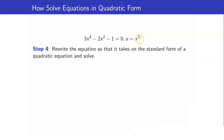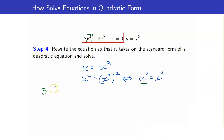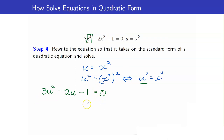If u is equal to x squared, this means that u squared is equal to x squared squared, or u squared is equal to x to the 4th. We now substitute: 3x⁴ becomes 3u². So we have 3u² - 2u - 1 = 0. Take note that this is now a quadratic equation, and we are ready to solve for this.